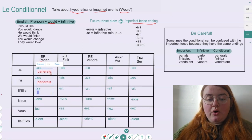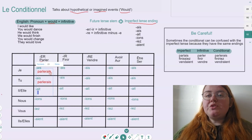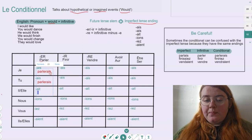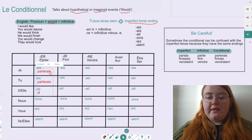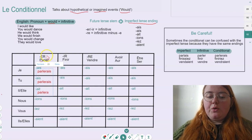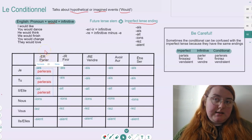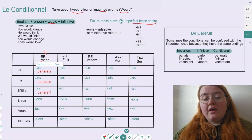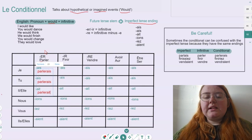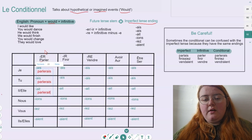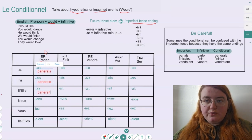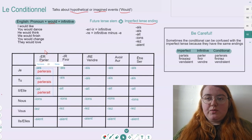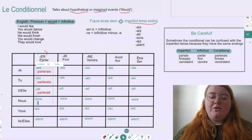Next one, we go to il or elle. So if we want to say 'she would speak' or 'he would speak', we want our infinitive stem, parler, and this time we add A-I-T to the ending. So this verb, il parlerait, sounds exactly the same as the je and tu form. The only difference is we have that T on the end instead of the S.